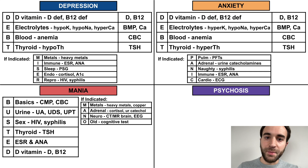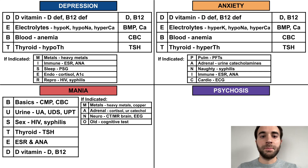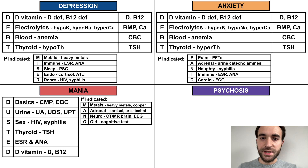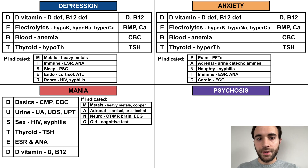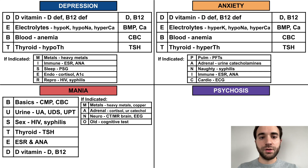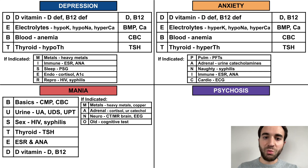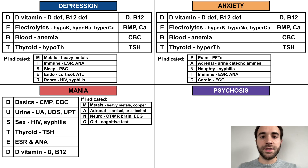Additional rare causes of mania can be remembered with the mnemonic MONO. Metals refers to both heavy metal poisoning and Wilson's disease, screened for with serum copper and urine ceruloplasmin. Adrenal abnormalities include hypercortisolism and pheochromocytoma. Neurologic abnormalities warrant brain imaging and EEG. And certain kinds of dementia, such as frontotemporal dementia, can be remembered by 'old.'